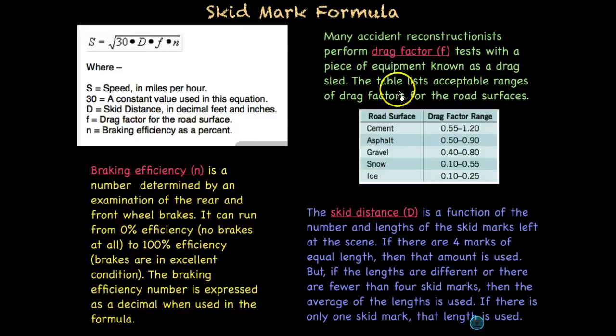Now let's look at drag factor. So these drag factor percentages or marks were compiled by doing tests with pieces of equipment known as drag sleds. So somebody went out and actually came up with the drag factors at a drag factor range. And this is a table of generally acceptable ranges on different types of road surfaces. And you'll notice that as the road becomes more slick, the drag factor goes down. The road that has the highest drag factor would be cement. And that would slow you down the most.